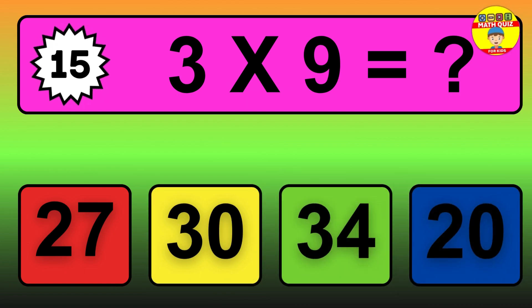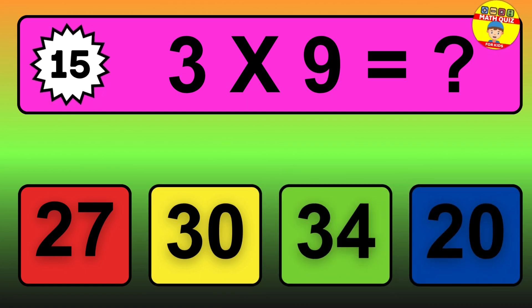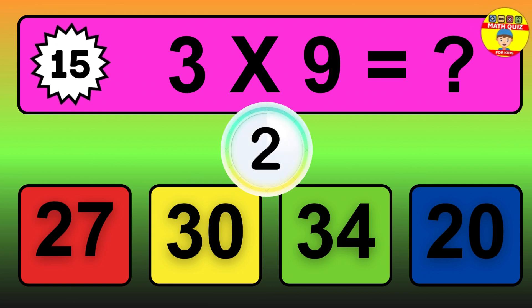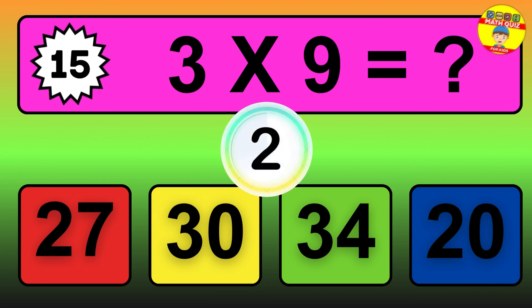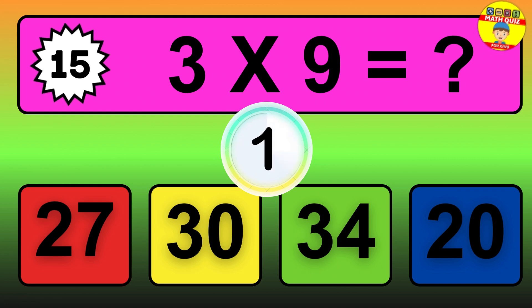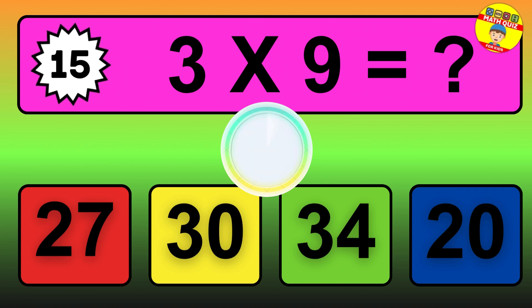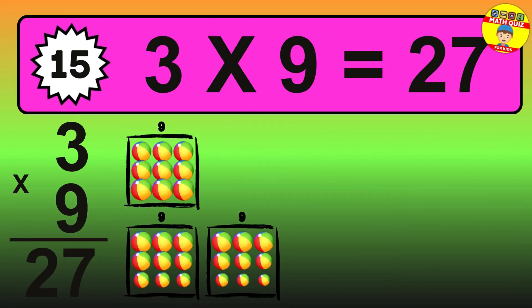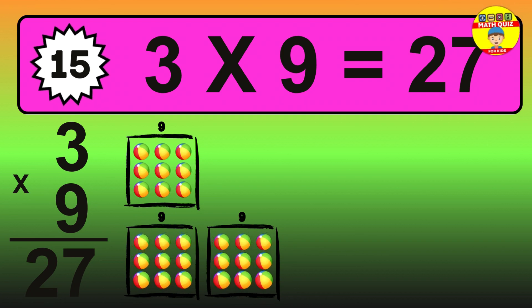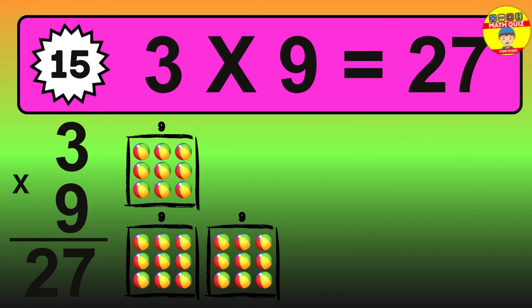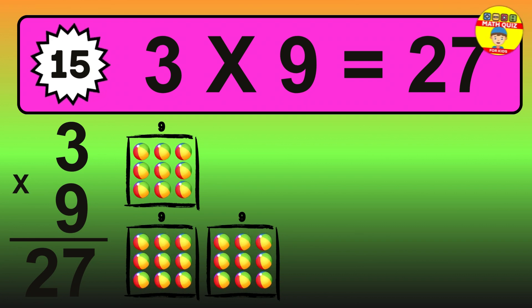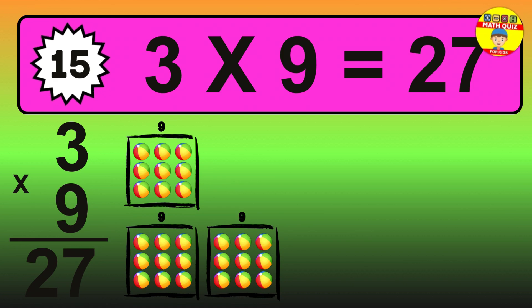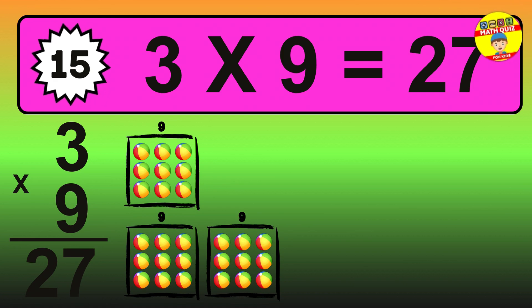Question 15. 3 times 9 equals what? The answer is 3 times 9 is 27. To calculate, we have 3 groups with 9 balls each one.